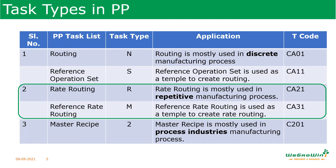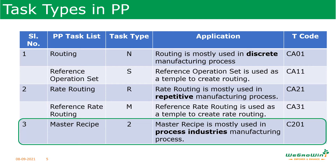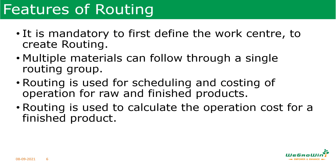For repetitive manufacturing, rate routing is used, created with transaction CA21, and the task type is R. Similar to reference operation sets, there is a reference rate routing used as a template for rate routings. For process industries, master recipe is used, created with transaction C201, and the task type is 2. This is similar to standard routing. In this course we will be covering standard routing; reference routing and master recipe will not be covered in detail.